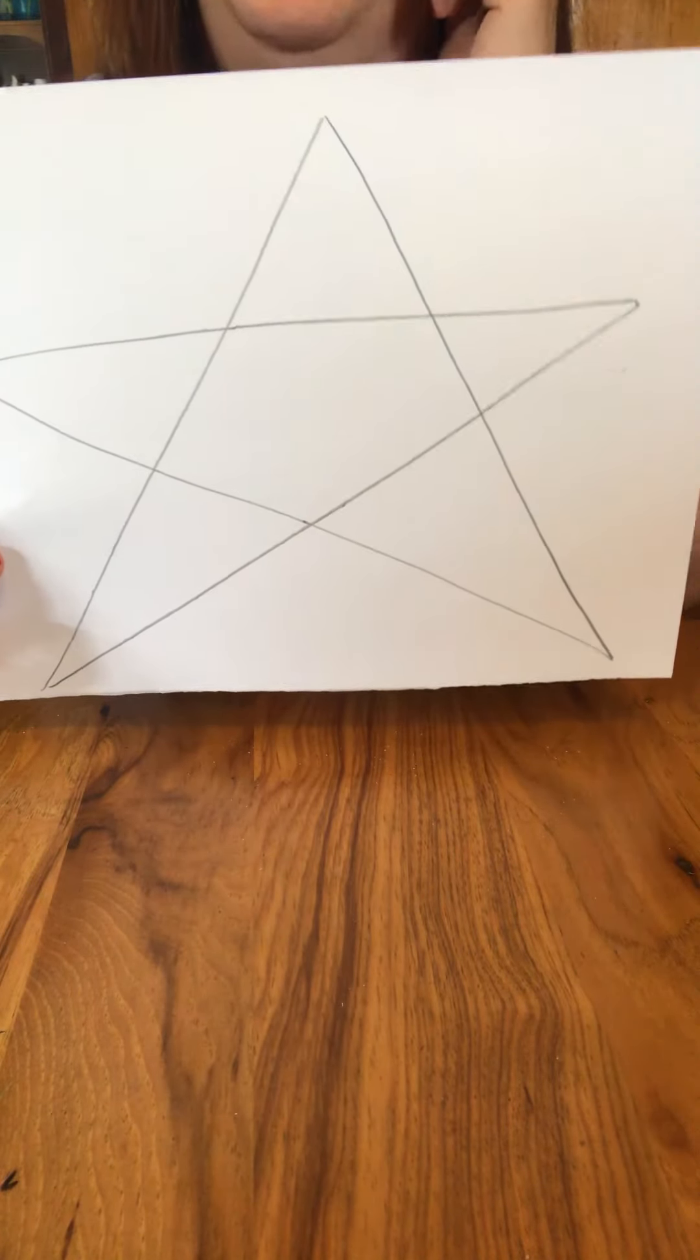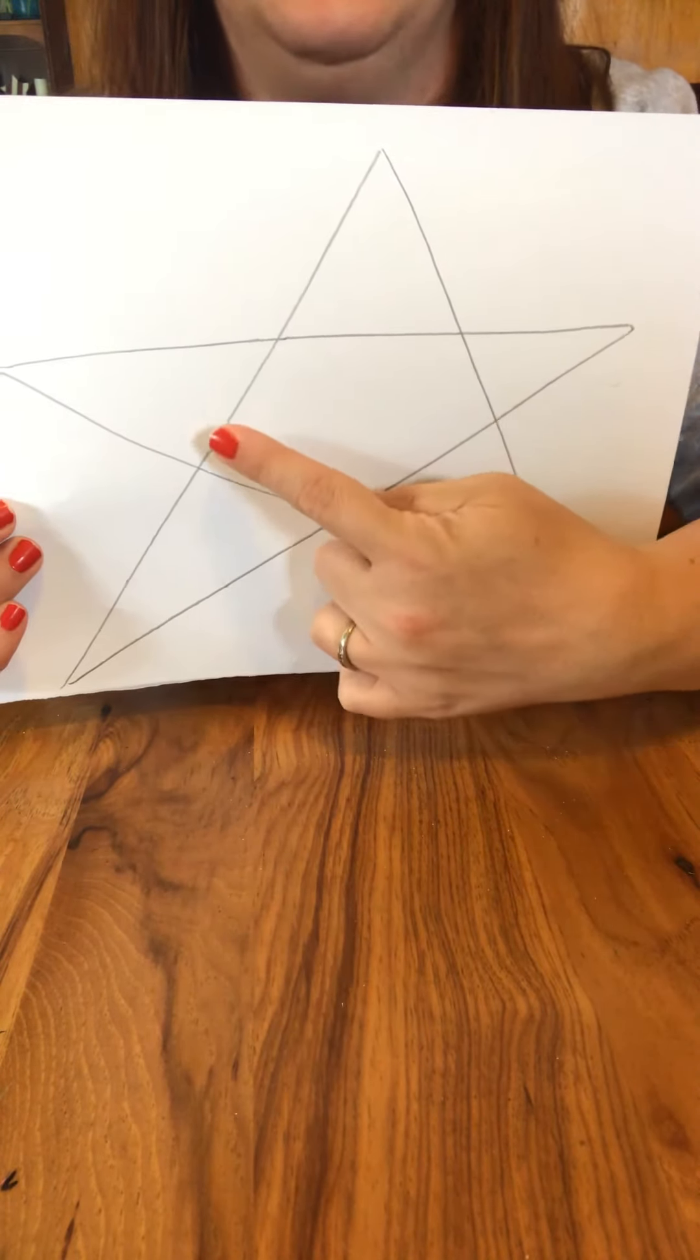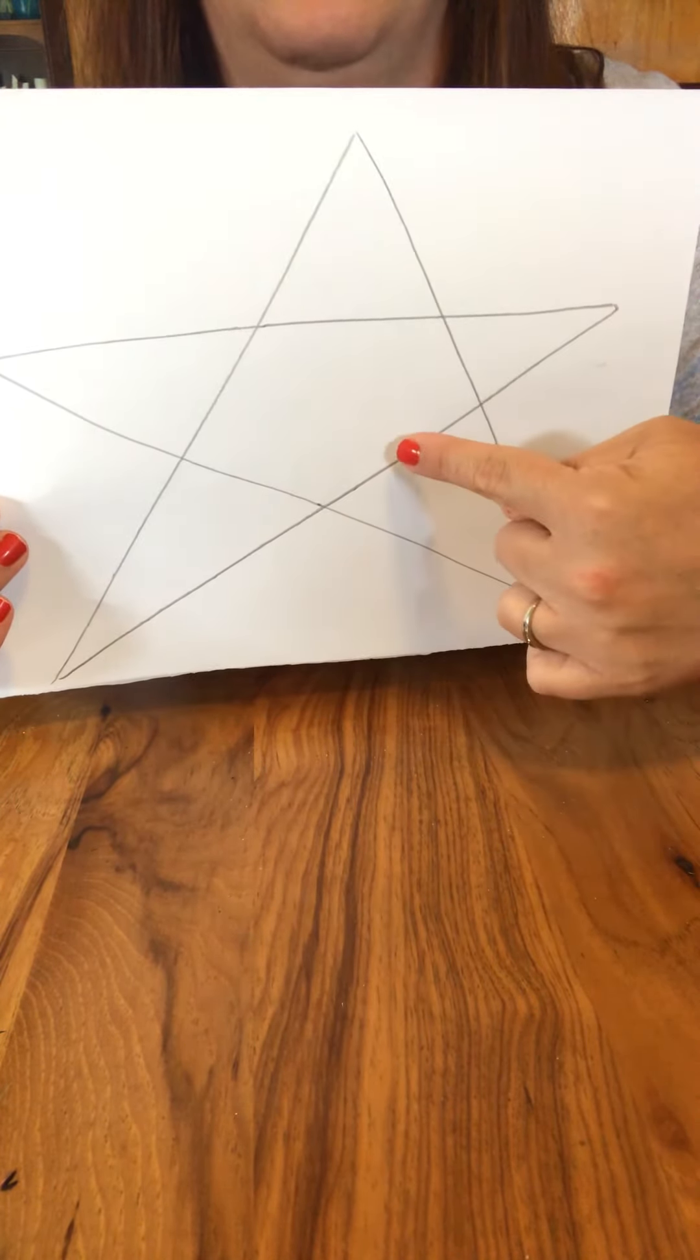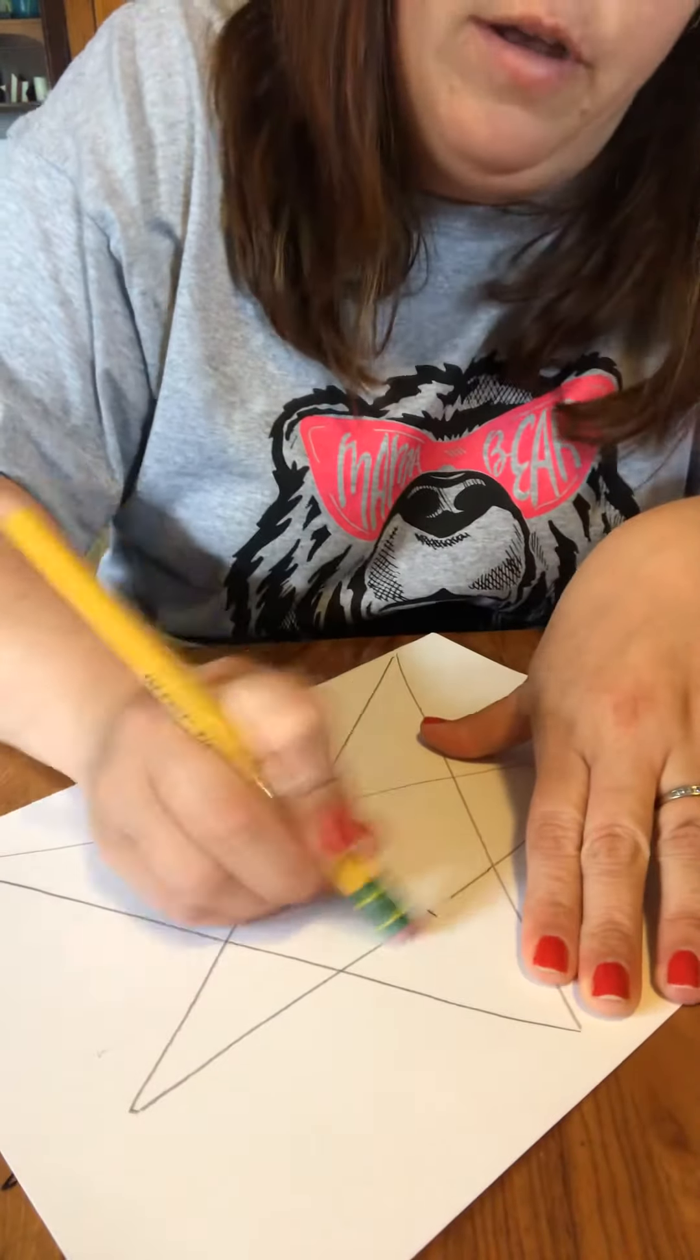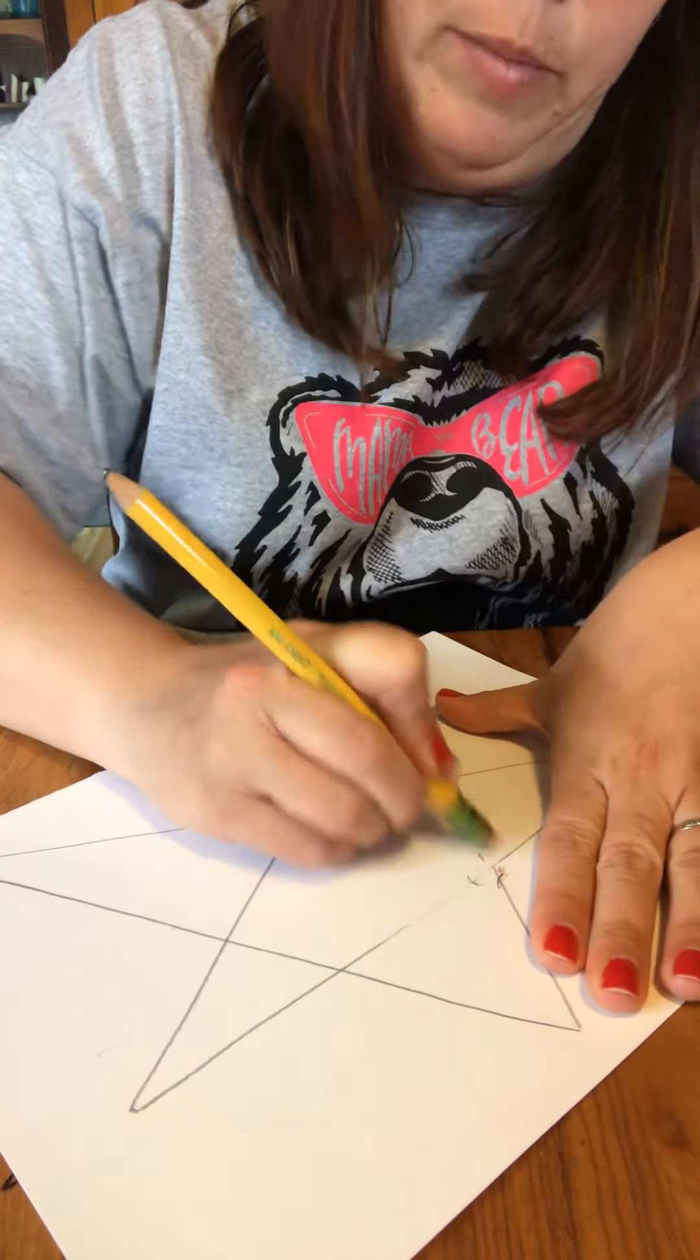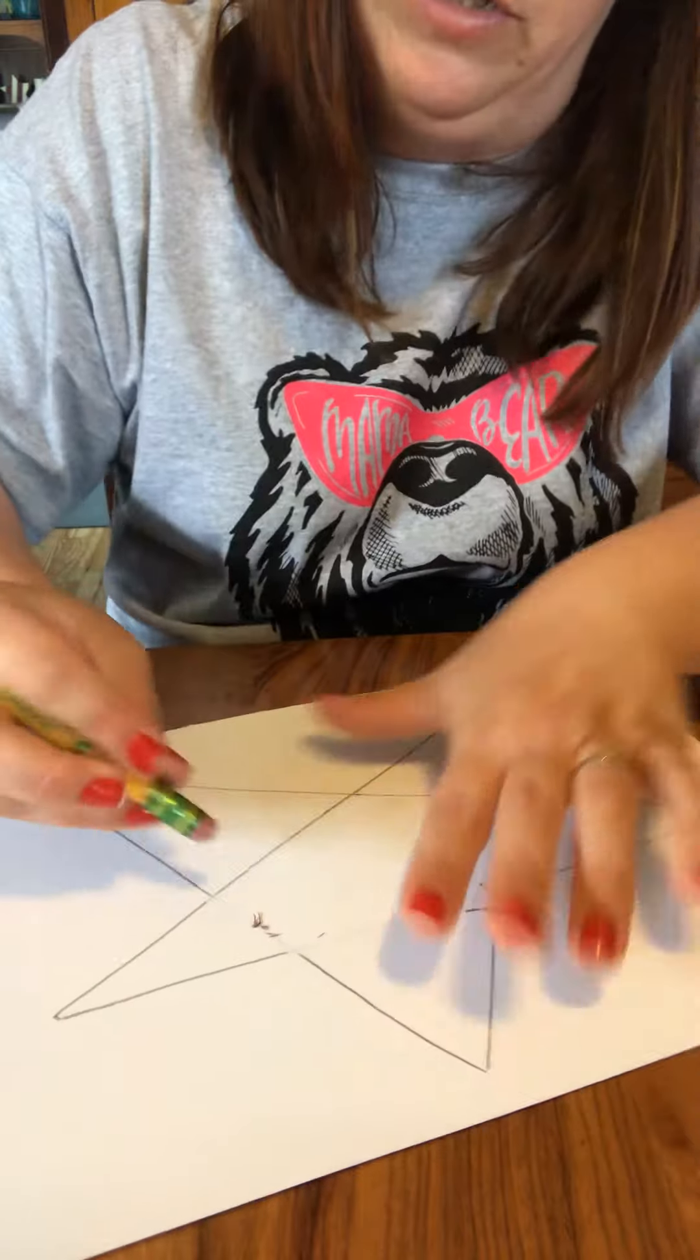Before you add the stripes my suggestion is to go through and erase these lines right here. Erase those four lines out of there, because when we add our stripes in it'll be confusing where you need to color if those lines are still in there.